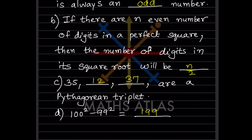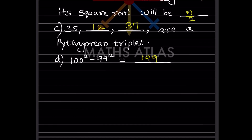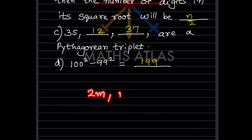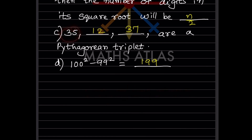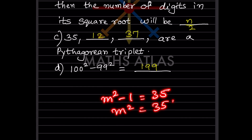The next question: 35, dash, dash are a Pythagorean triplet. The formula for a Pythagorean triplet is 2m, m²−1, and m²+1. Since 35 is given, we consider m²−1 = 35, so m² = 36 and m = 6.